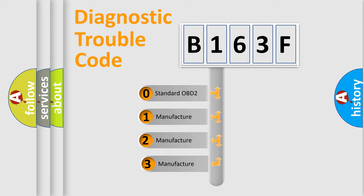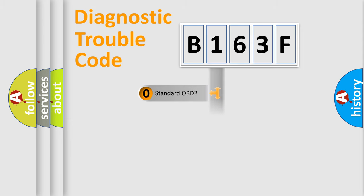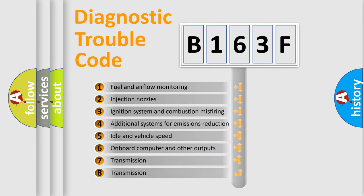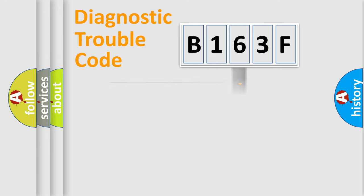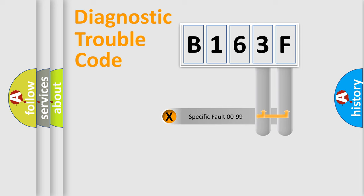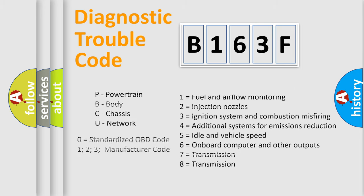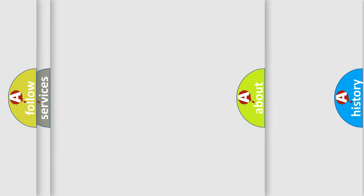If the second character is expressed as zero, it is a standardized error. In the case of numbers 1, 2, or 3, it is a manufacturer-specific error. The third character specifies a subset of errors. This distribution is valid only for the standardized DTC code, and only the last two characters define the specific fault of the group. This division is valid only if the second character code is expressed by the number zero.